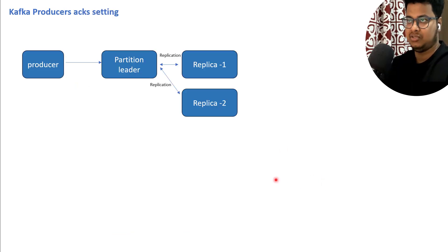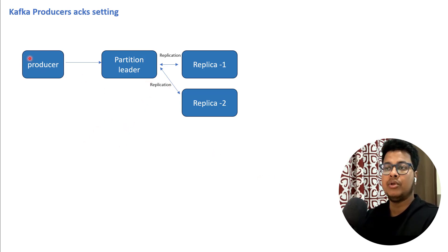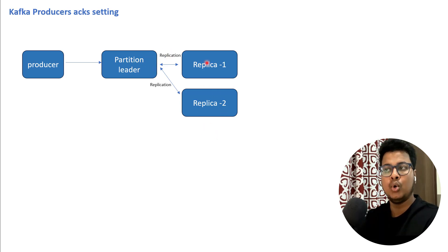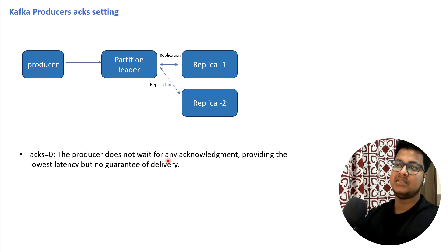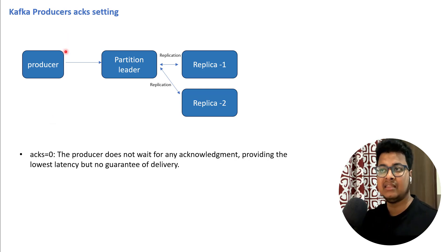This is all about partitions. There is also something called Kafka producer acknowledgement settings. If you remember, whenever we want to produce some data, it goes to the partition leader, and this partition has replicas. Whenever I'm sending the data, I'm sending it to the partition leader, but the replica will pull the data from the partition leader and copy it to their own location. And I may want to get acknowledgement that my data was properly copied or not. This is where the acknowledgement setting that you can set on the producer comes in.